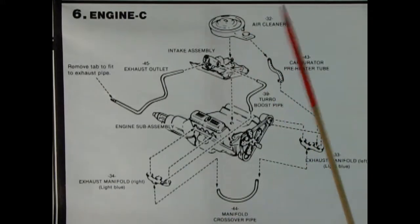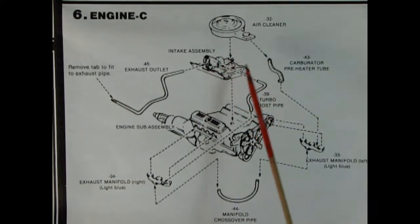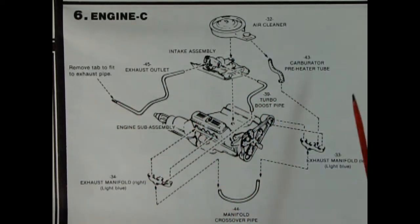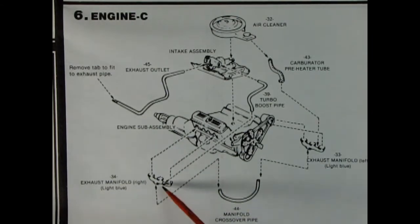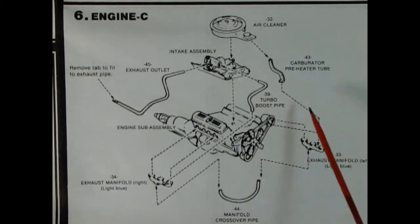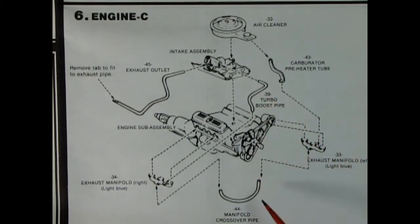Panel six shows the air cleaner going onto that intake manifold. And then we've got this exhaust outlet that goes to the exhaust pipe. And there's our exhaust manifold there, as well as one here. And we've got a carburetor preheater tube and a turbo boost pipe. And then this crossover manifold piece.